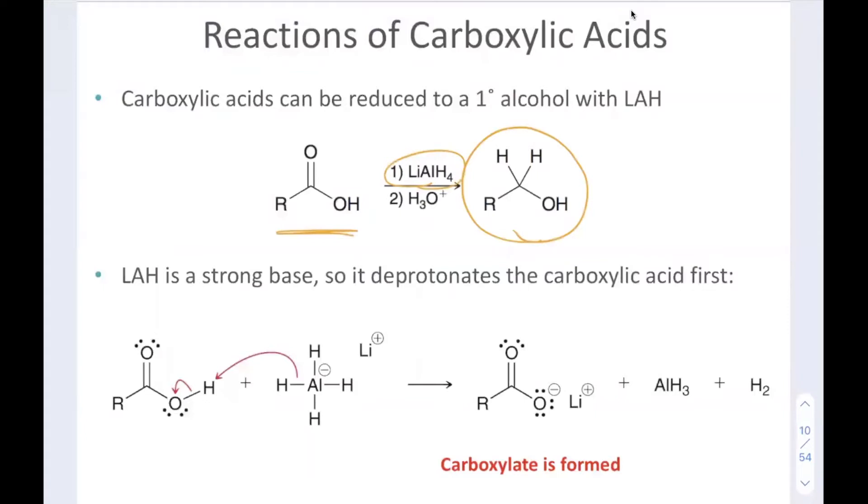In the first step of the reaction, recall that lithium aluminum hydride we could think of as H minus. In this case, the H minus is going to extract the proton from the carboxylic acid, causing the conjugate base to be formed, stabilized by the counter ion lithium.